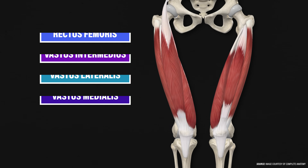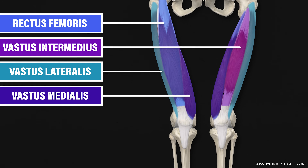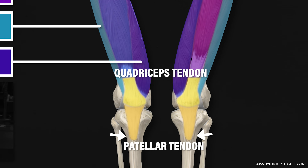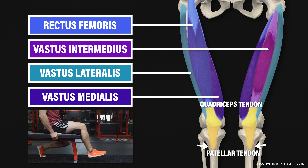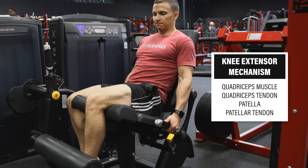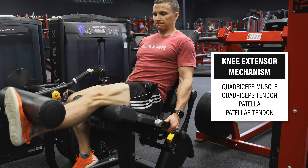The quadriceps consist of four different muscles: the vastus medialis, the vastus lateralis, the vastus intermedius, and the rectus femoris. All four muscles come together to form the quadriceps tendon that attaches to the patella or kneecap. They then insert on the tibial tuberosity via the patellar tendon and act to extend or straighten the knee. Together, the quadriceps muscle and tendon, patella, and patellar tendon are referred to as the knee extensor mechanism.